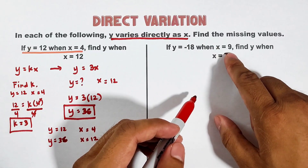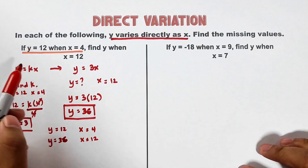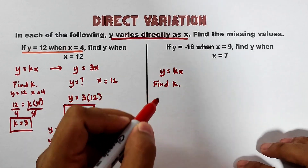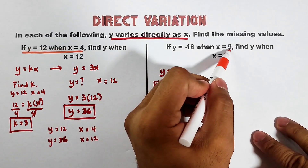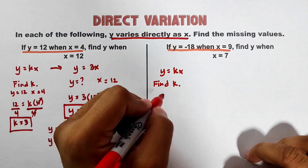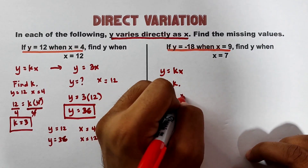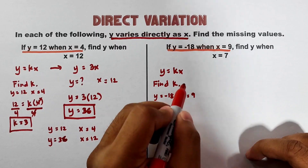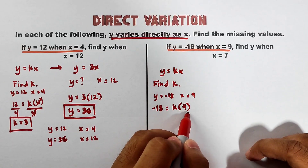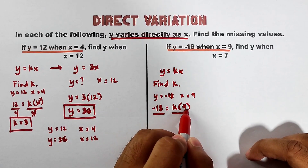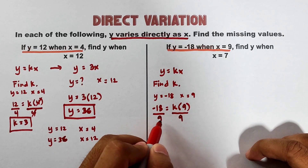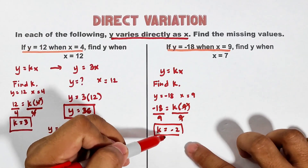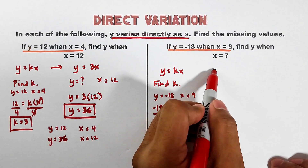Example number 2: if y is equal to negative 18 when x is equal to 9, find y when x is equal to 7. We use the same equation y = kx and find k. Substituting y = negative 18 and x = 9 gives us negative 18 = 9k. Dividing both sides by 9, we get k = negative 2.